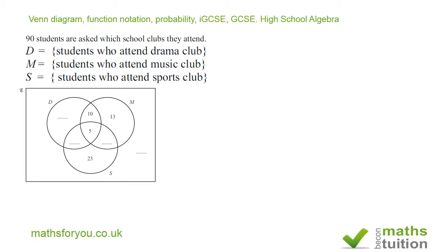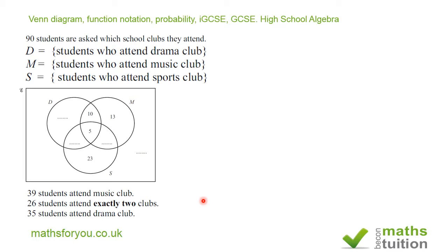D stands for drama club, M stands for music club, S stands for sports club. Note that within the Venn diagram itself we've got some gaps to be filled in. For more data: 39 students attend music club, 26 attend exactly two clubs, and 35 students attend drama club. We've got to use this information to fill in the gaps.